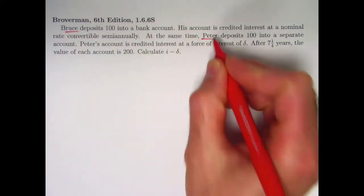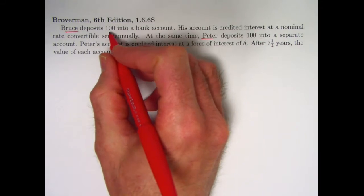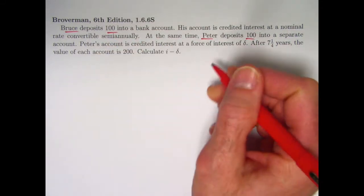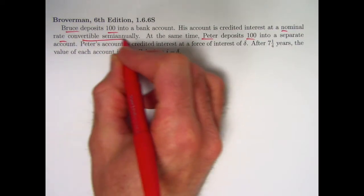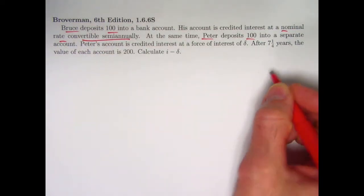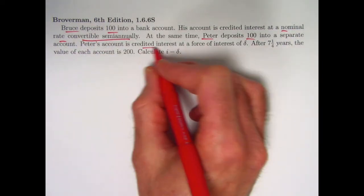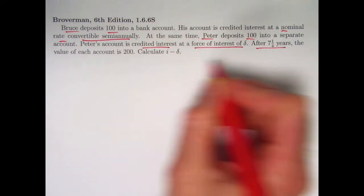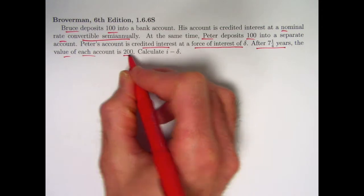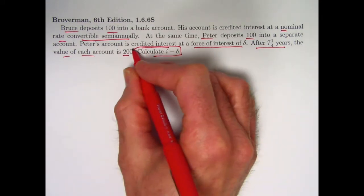You've got two people, Bruce and Peter, with two accounts. They both deposit 100. Bruce's account is credited interest at a nominal rate convertible semi-annually, twice per year. And Peter's account is credited interest at a force of interest delta. After seven and a quarter years, the value of each account is 200. Calculate I minus delta.